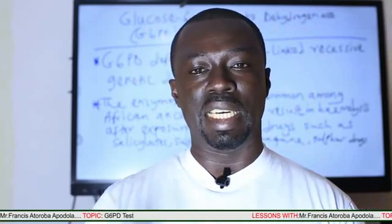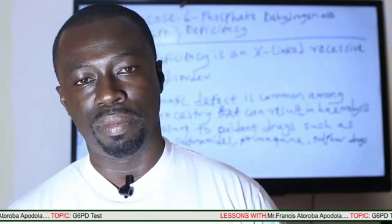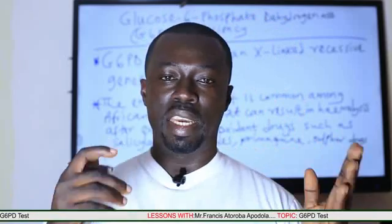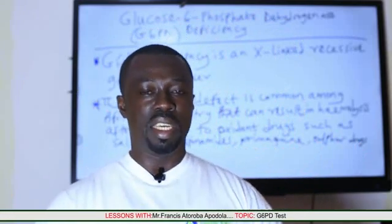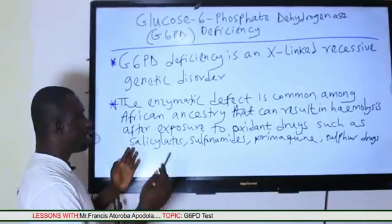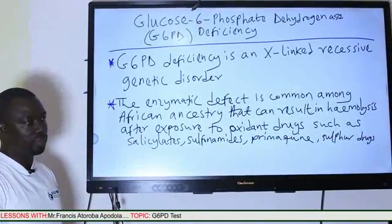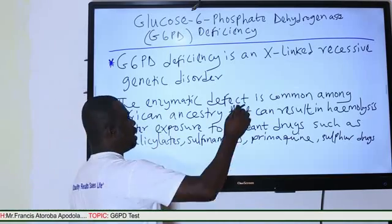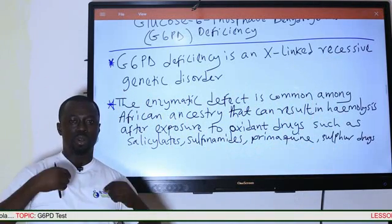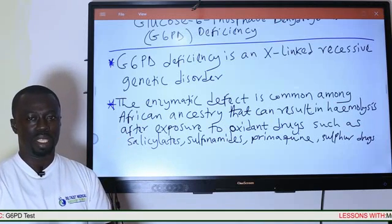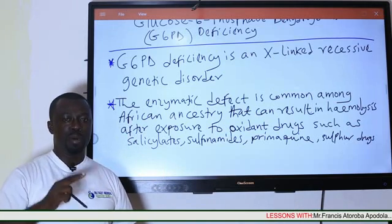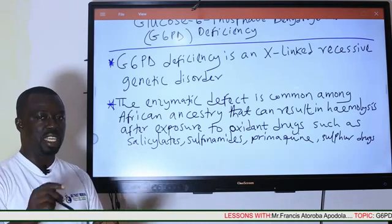Let's quickly look at the genetics of the G6PD enzyme. The G6PD enzyme is actually borne on the X chromosome and inherited in a recessive pattern. In other words, G6PD deficiency is an X-linked recessive genetic disorder. Being a recessive genetic disorder implies that for the disease to occur, both copies of the genes on both chromosomes must be abnormal.